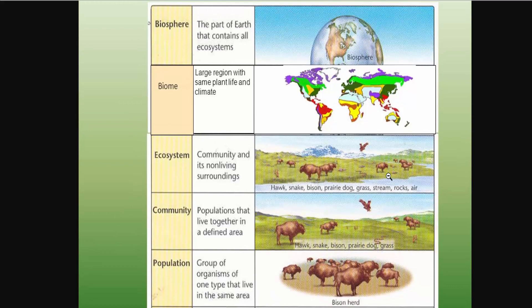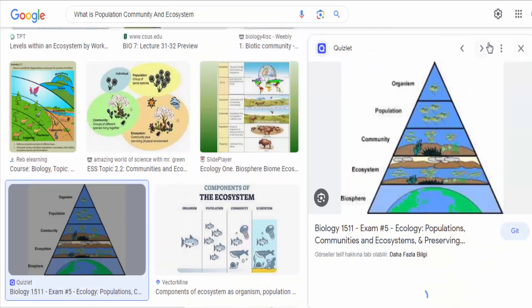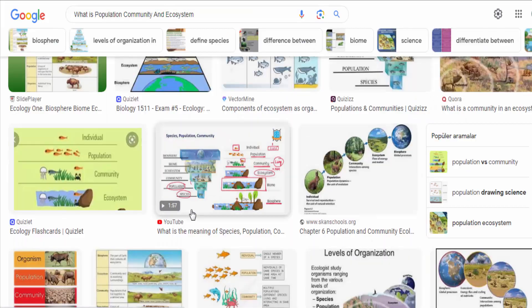Community. A community is formed by all the populations of different species that coexist and interact within a given area or habitat. It encompasses the various plant, animal, and microbial species living together and sharing resources.